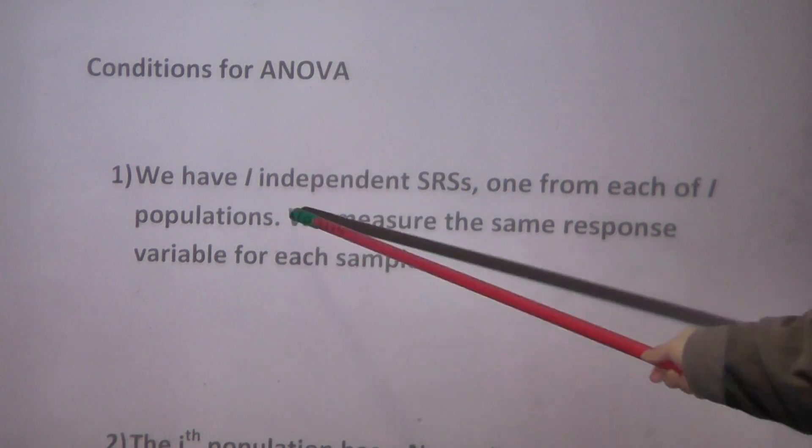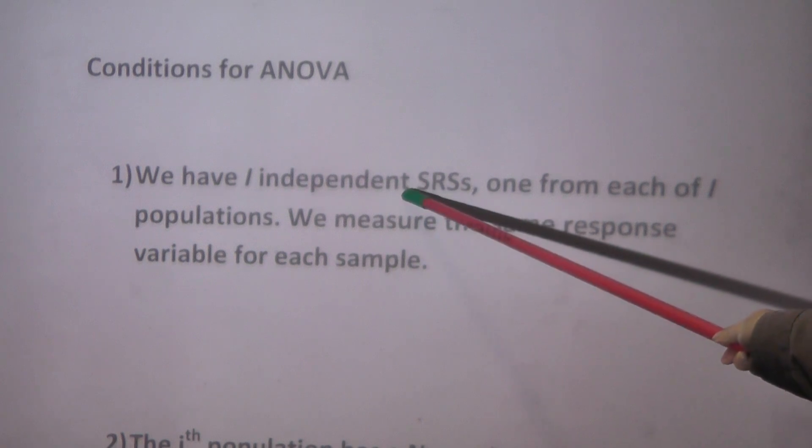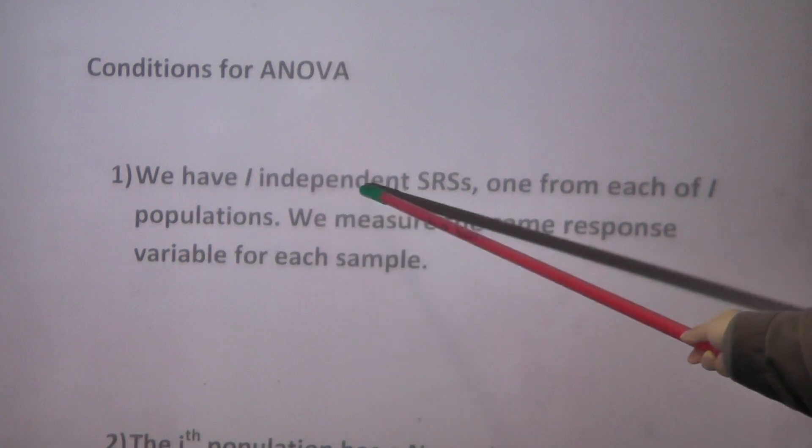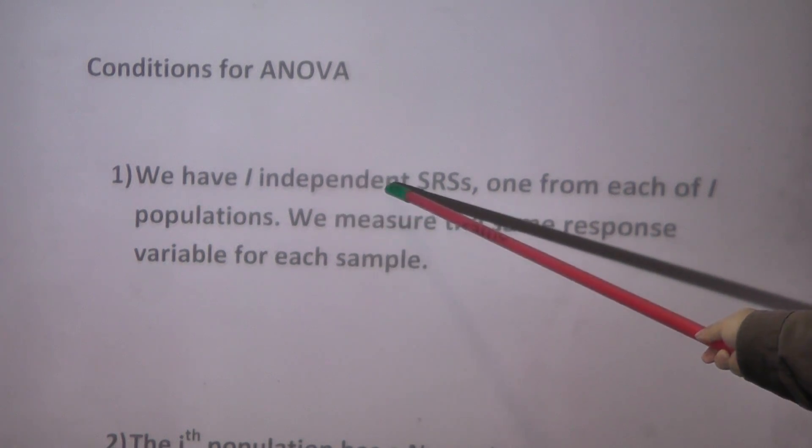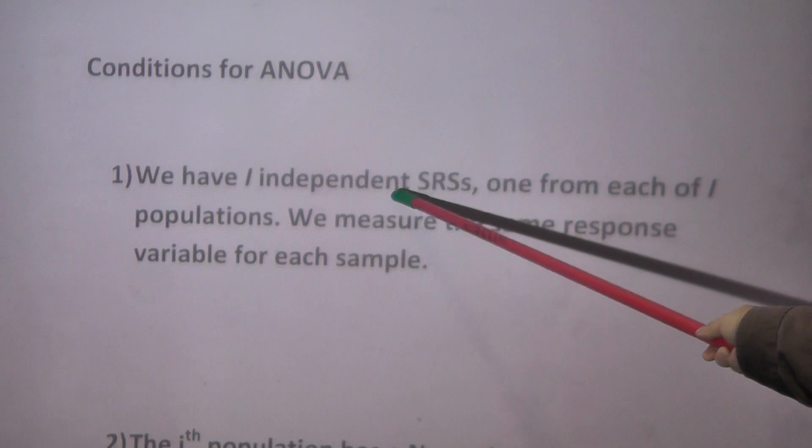That means the first group of couples has nothing to do with the second group or third group of couples. Similarly, the second group of couples, the second marriage, those five observations in second marriage, they are independent with the five couples from the first marriage and the five couples for third marriage in our data set.